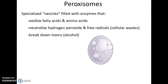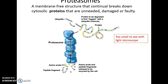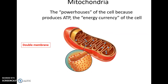Peroxisomes are specialized vesicles filled with enzymes for neutralizing free radicals and hydrogen peroxide, and they can also break down toxins like alcohol, oxidized fatty acids, and amino acids. Proteasomes are tiny protein organelles that break down proteins that are no longer needed, returning them to their amino acid components.